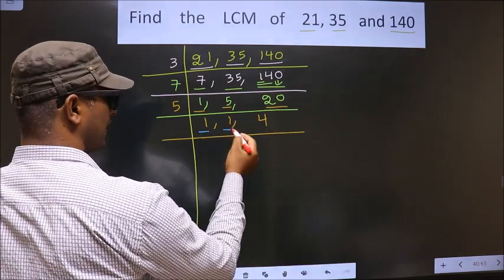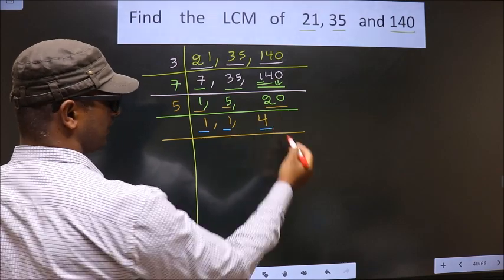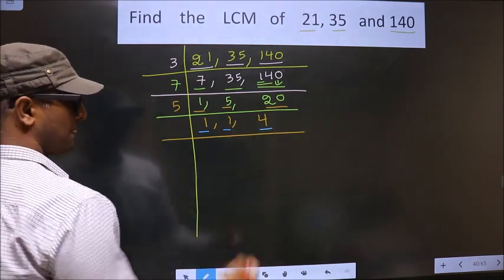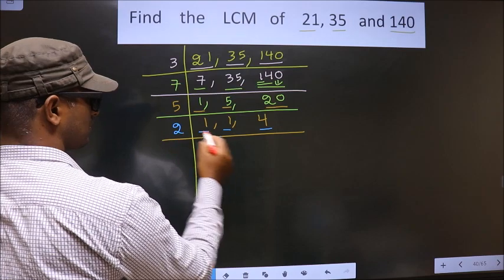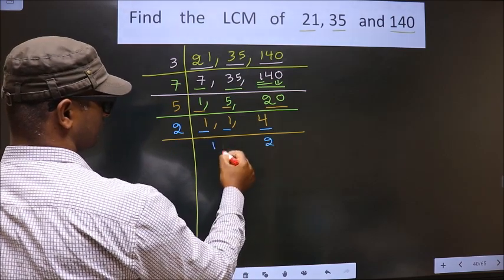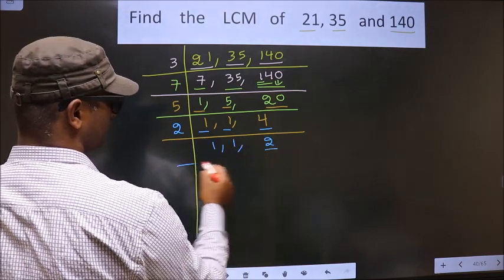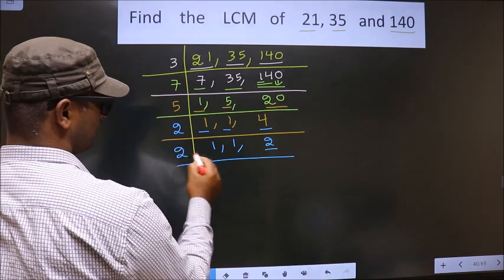Now we got 1 here and here. So focus on the next number, that is 4. 4 is 2 times 2. Now here we have 2. 2 is a prime number. So we take 2 once, 2.